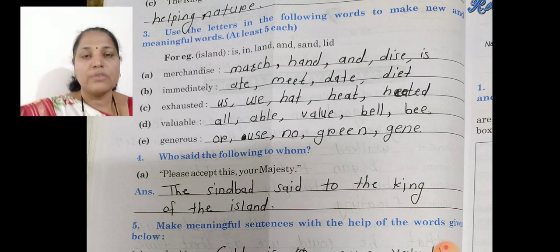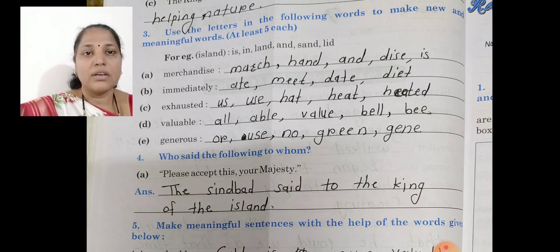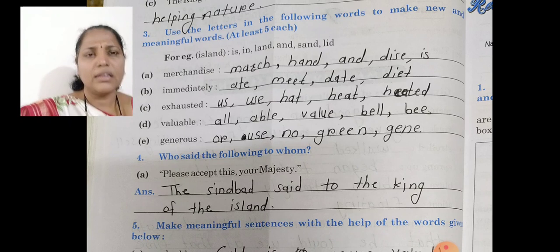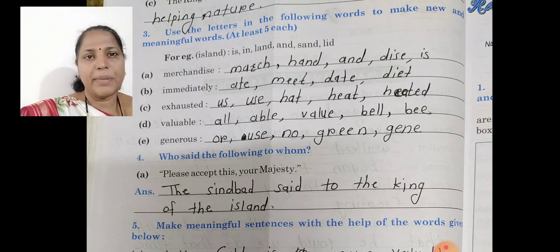The first word is 'merchandise.' Merchandise ki spelling se taiyaar hote hain — jo spelling: made by the spelling is merch, hand, and dish. Isse 'as' bhi banta hai and 'hook' bhi hota hai. Then after, isse aur bhi spellings bante hain, toh aap unko bhi mention kar sakte hain.